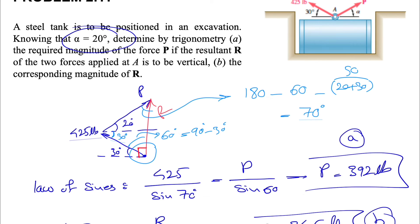That's all we need to do for this question: figure out the angles, and since we are asked to have the resultant vertical, we can find R using trigonometry. That would be the final answer for this question.